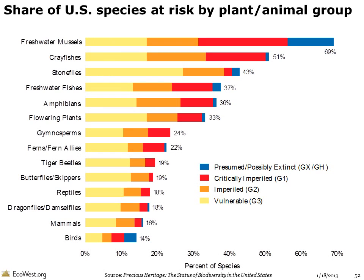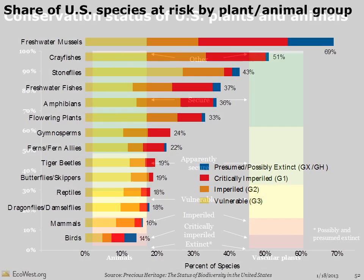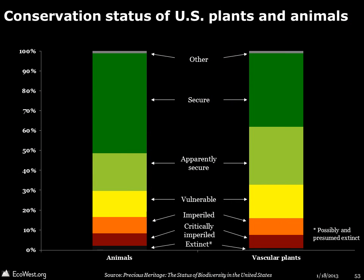So how are US species doing? This graphic uses the Natural Heritage Ranking and shows what percent of species fall into the most threatened categories. Nationally, freshwater mussels, crayfish, stoneflies, and fish are the most at risk, while mammals and birds are the least at risk. Overall, about 30% of plants and animals in the US are considered vulnerable or worse, according to this ranking system used by the Nature Conservancy and state governments.